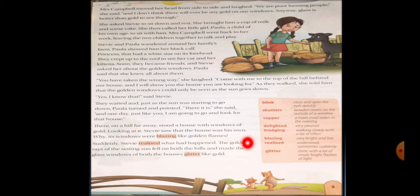That was a question in Steve's mind, but suddenly Steve realized what had happened. But now he got the answer. And what was the answer? The golden rays of the setting sun fell on both the hills and made the glass windows of both the houses glitter like gold. That was the answer of the question.